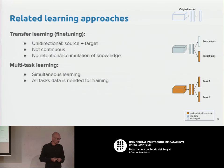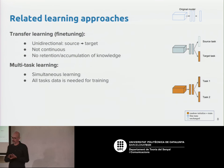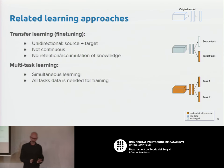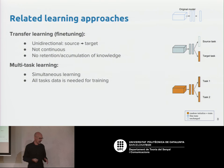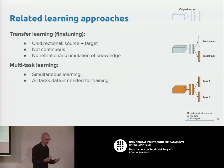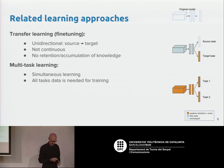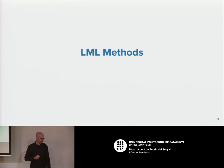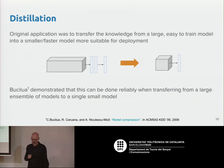Multitask learning also assumes all tasks are learned simultaneously, so we need the training data for all tasks in this process. This is not the idea in lifelong learning, where we work progressively over time and don't want to store the training data for old tasks. Let's see some of the methods that have appeared in the literature for lifelong learning.